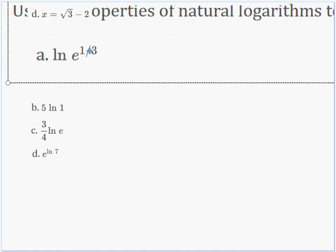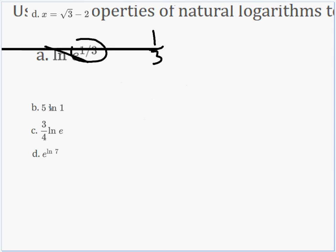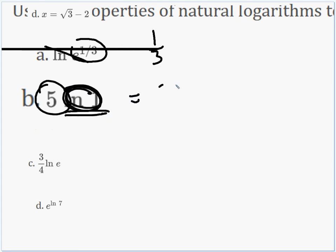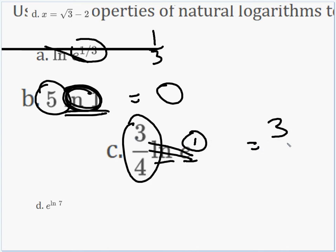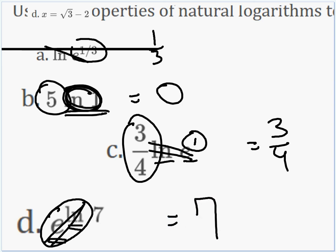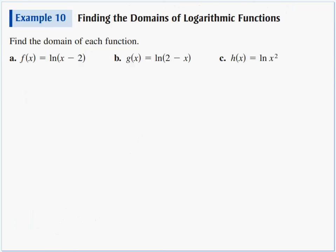So this first one, natural log of e^(1/3), ln and e are going to cancel. Answer is just 1/3. Letter B, 5 times natural log of 1. Well, we have a property, this nat log of 1, that turns into a 0. 0 times 5 is 0. In part C, we've got a fraction, but then we've got the natural log of e to the 1st. And the natural log and e are going to cancel, so that's going to be 1 times 3/4. That's equal to 3/4. And the last one looks like an inverse property going on there. We've got a base of e, we've got an exponent natural log, those are inverses of each other, they're going to cancel, and our final answer there would just be 7.